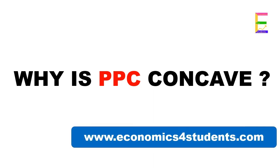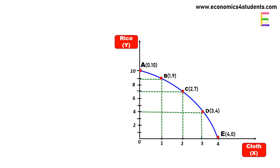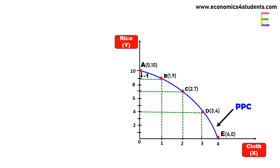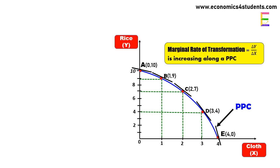Welcome to Economics for Students. In this video we are going to learn why the production possibility curve is concave to the origin. To understand this concept, let us consider this PPC. The PPC is concave because in order to produce every additional unit of cloth we need to sacrifice increasing quantities of rice — that means the slope of the PPC or marginal rate of transformation goes on increasing as we move along the production possibility curve.